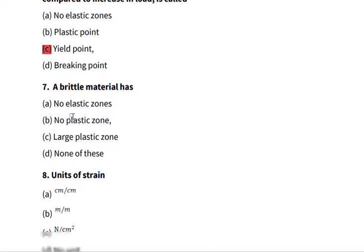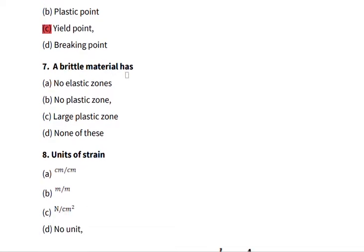Number seven: a brittle material has no elastic zone, no plastic zone, large plastic zone, and a brittle material has no plastic zone.